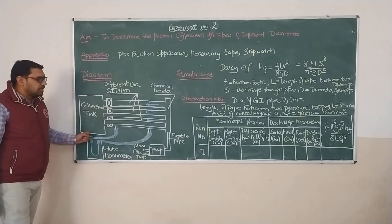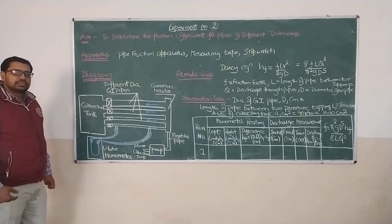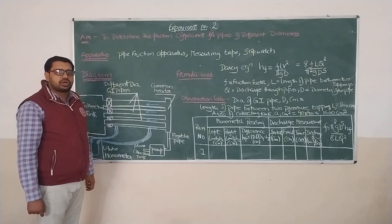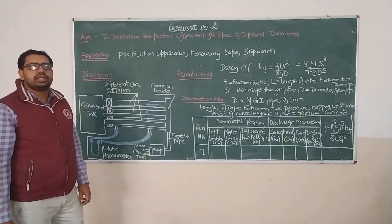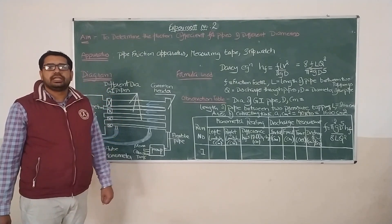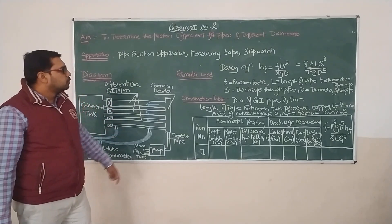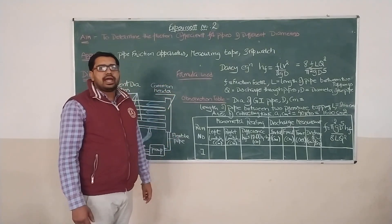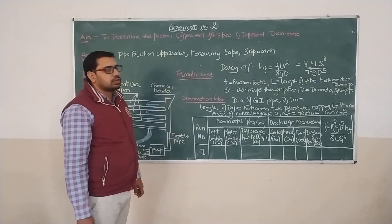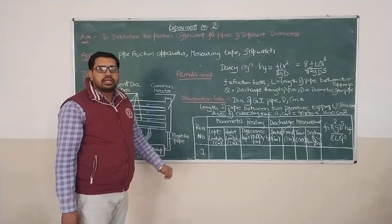There is also a collection tank which is used to measure the flow rate, which is similar to what we have seen in other experiments also. I will take you to the setup and explain all these points there again, and then we will come back to this observation table and do one calculation to find out the friction coefficient for the pipe that we are using.